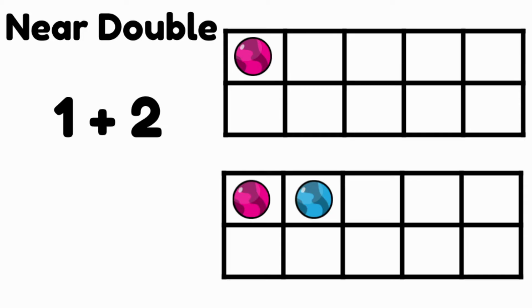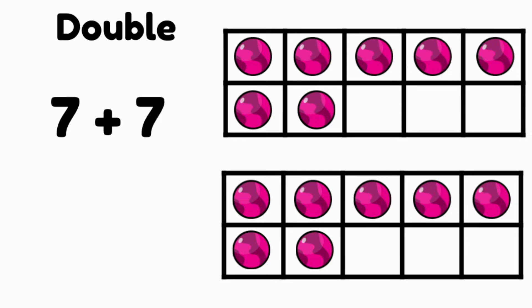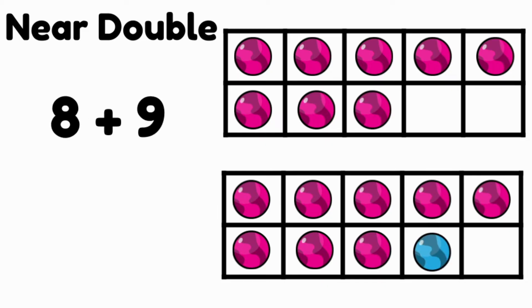Let's check out another one. Seven plus eight is a near double of seven plus seven. This is what double seven looks like, and one more makes seven plus eight, which is a near double. Eight plus nine is a near double of eight plus eight — it's one more.